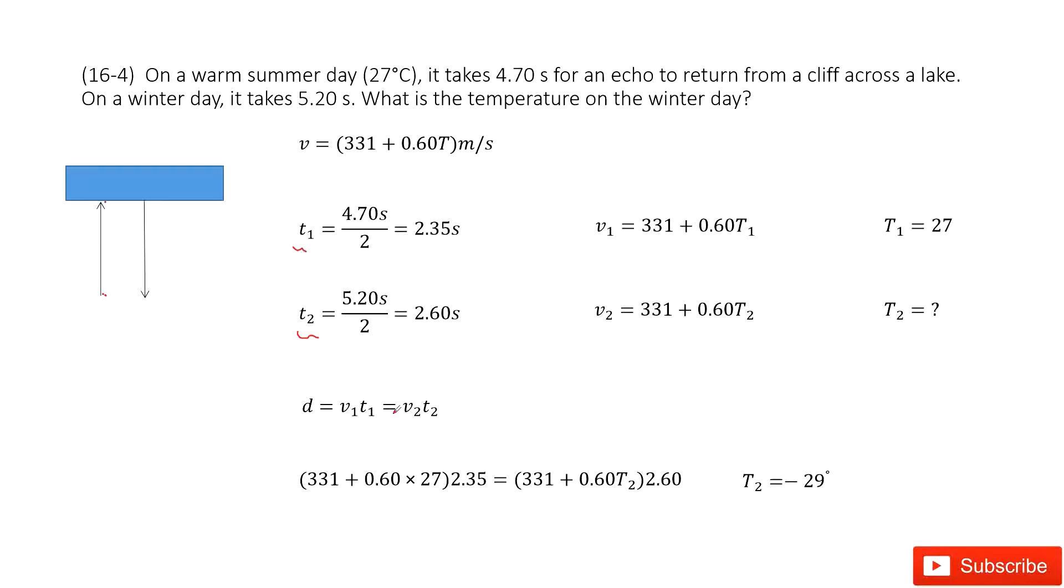And t1, t2 is given. So we need to look at v1, v2, and then it tells us the temperature there. So we can connect the speed with temperature by this equation in our textbook. So in this one, we get v1, v2.